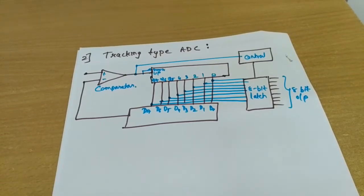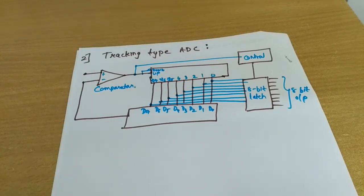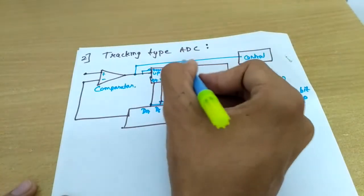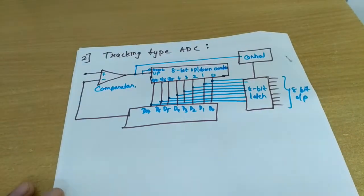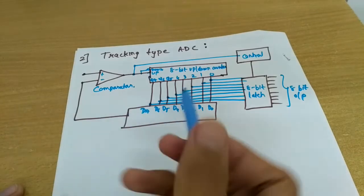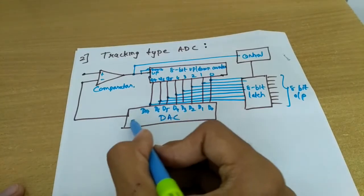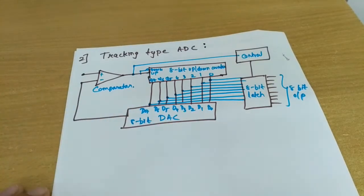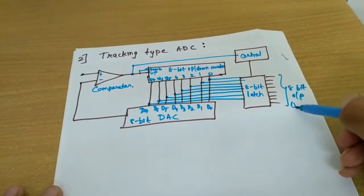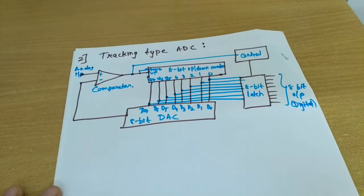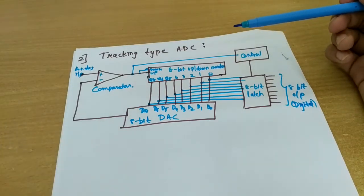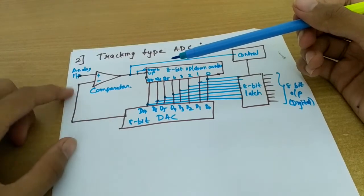In this video we will be discussing tracking type ADC. It is same as counter type ADC but it will require less time because it will use an up-down counter. This is an 8-bit up-down counter, and the rest of the components are the same — 8-bit DAC, reference voltage, digital output, and analog input.